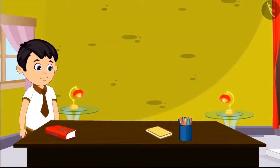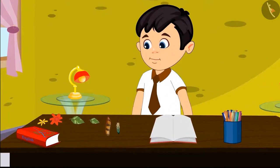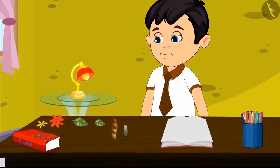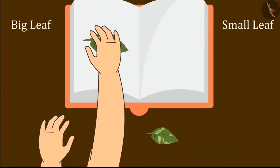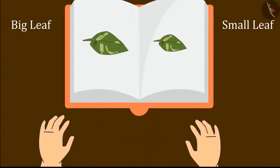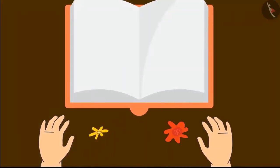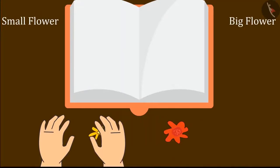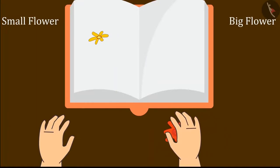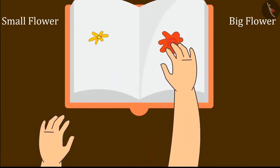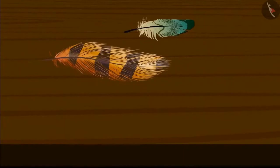When Chotu reached home, he took out his notebook and brought everything to stick in it. First, he pasted the leaves — putting the big leaf here and the small leaf there. Then he pasted the flowers: the small flower in one place and the big flower in another. Now it was the turn of the bird's feathers. He took out the two feathers of the bird.